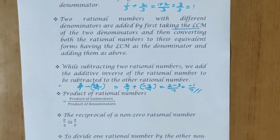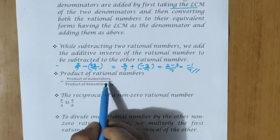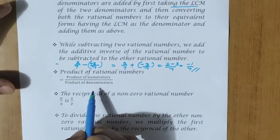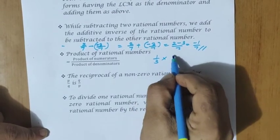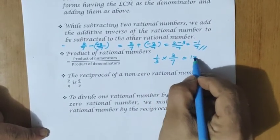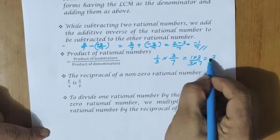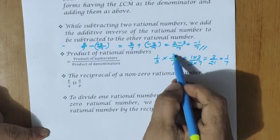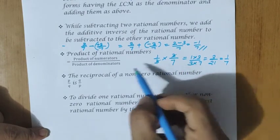The product of two rational numbers is the product of the numerators divided by the product of the denominators. For example, 1 by 3 into 3 by 7: we compute 1 into 3 divided by 3 into 7, giving 3 by 21. Cancelling the common factor 3, we get 1 by 7.